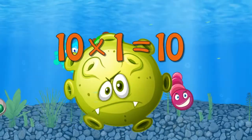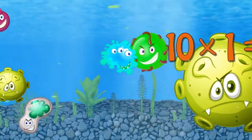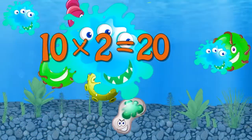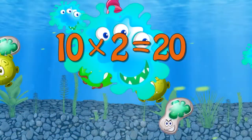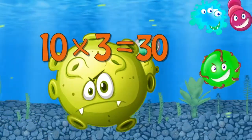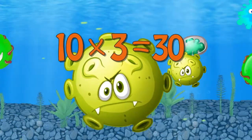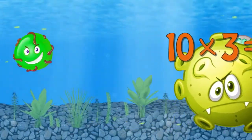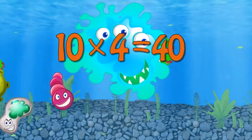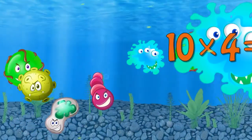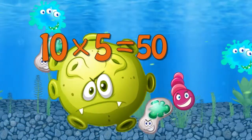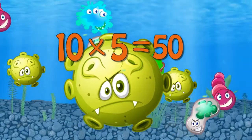Ten times one is ten. Ten times two is twenty. Ten times three is thirty. Ten times four is forty. Ten times five is fifty.